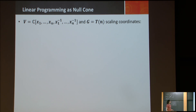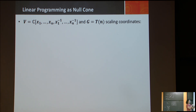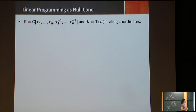Now let's see some optimization problems, which are null cone problems. Our quintessential optimization problem is linear programming. Suppose the vector space is the set of all Laurent polynomials — polynomials in variables x_1 up to x_n and also their inverses, so all monomials are allowed to have negative integer exponents. My group action is the torus group — the set of all diagonal matrices — acting by scaling coordinates.